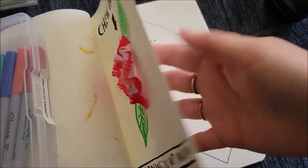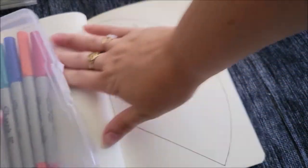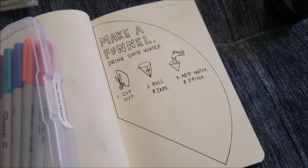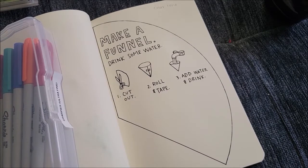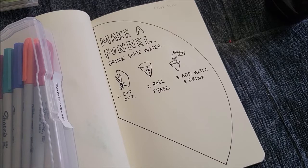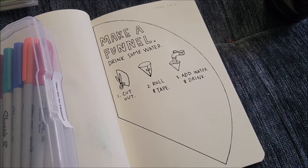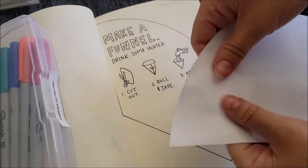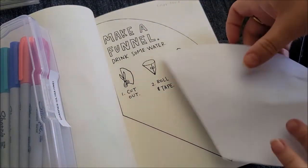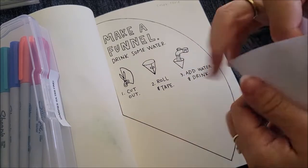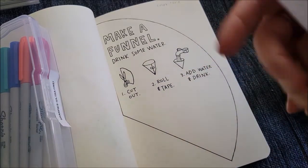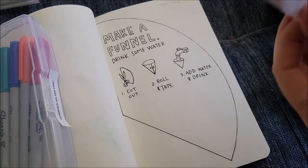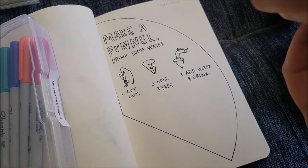Our next page is make a funnel and drink some water, so I wrote color the cone. Yeah I guess I can do that. So here's the deal, I do want to color the cone but I also want to follow the directions, so I think I'm gonna roll this, try to drink out of it first, and then I will color it with watercolor pencils because I don't think I want to ingest that.